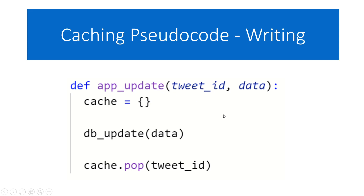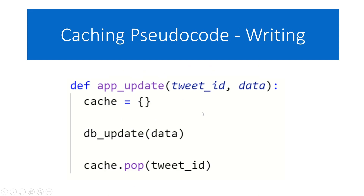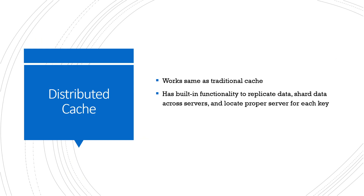For writes, we have a similar setup. If we're updating a value, we go to our database, update the tweet, and if the tweet is already in the cache we want to make sure we remove it so we don't have an issue with stale data. We don't want users seeing the old version of whatever data we just updated, so we remove it from cache. The next request will re-fetch from the database and that way users aren't getting old data.